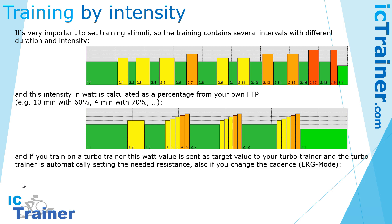If you train on a turbo trainer, the watt value is sent as a target value to your turbo trainer, and it automatically sets the needed resistance. Also, if you change the cadence, the resistance is adjusted by the turbo trainer itself. This is called ERG mode, and it is very helpful for your training.